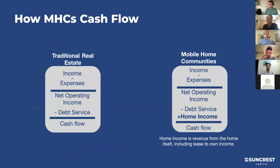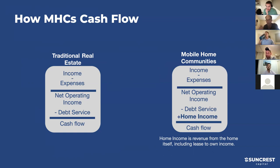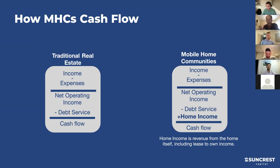Now I'll talk about how mobile home parks cash flow, how you determine the value of a mobile home park, and how adding homes can dramatically increase the value. We have two simplified P&L examples - one for traditional real estate and one for mobile home communities. In traditional real estate, you take income from rent, subtract expenses to get Net Operating Income, then subtract debt service - your mortgage - to get cash flow.